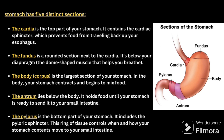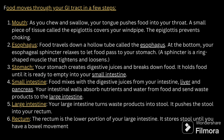The five sections of the stomach are: cardia, fundus, body (corpus), antrum, and pylorus. The cardia is the top part of the stomach and contains the cardiac sphincter, which prevents food from traveling back up to the esophagus. The fundus is the rounded dome-shaped section next to the cardia, below the diaphragm. The body or corpus is the largest section where the stomach contracts and begins to mix food. The antrum lies below the body and holds food until the stomach is ready to send it to the small intestine.